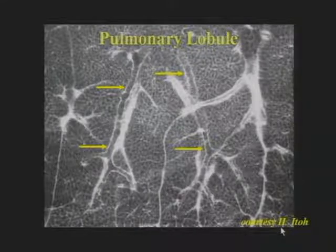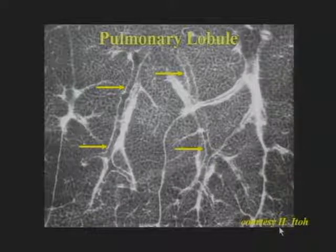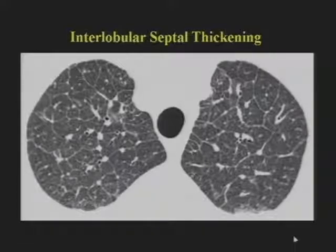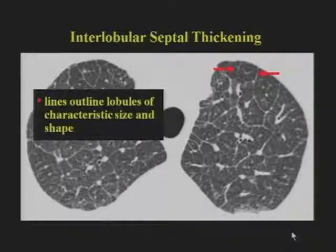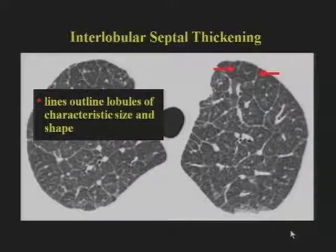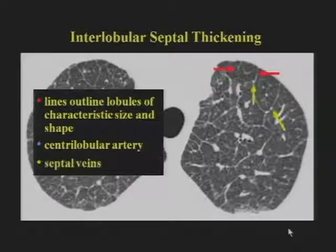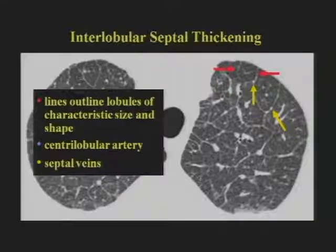Pulmonary lobules range from one to two and a half centimeters in diameter and characteristically have a polygonal shape. On high-resolution CT, interlobular septal thickening produces a reticular pattern. We can identify this as due to interlobular septal thickening because the lines outline pulmonary lobules of characteristic size and shape. One way we recognize lobules is the centrolobular artery, visible as a dot or branching structure in the center. Within the interlobular septa themselves, we often can make out septal veins, which may be dot-like or occasionally branching.